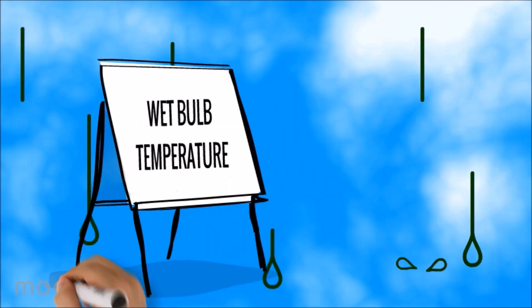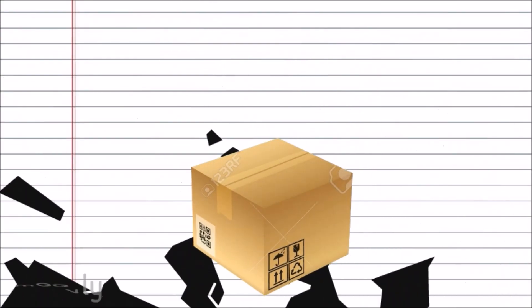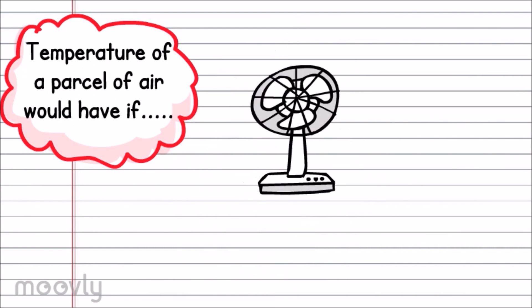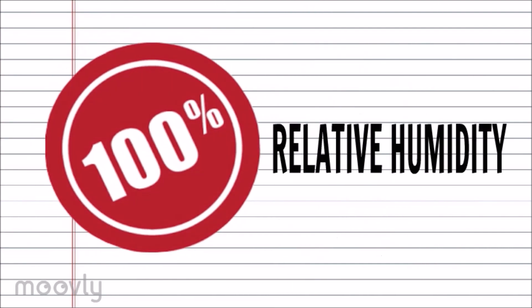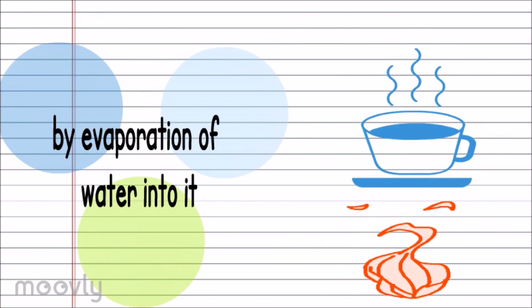Next, the wet bulb temperature. The wet bulb temperature is the temperature a parcel of air would have if it were cooled to saturation, which is 100% relative humidity, by the evaporation of water into it.